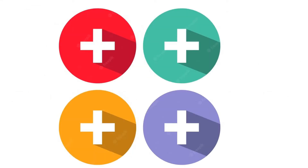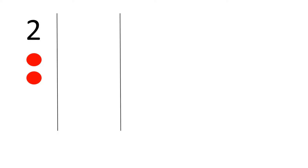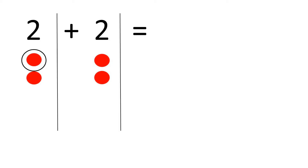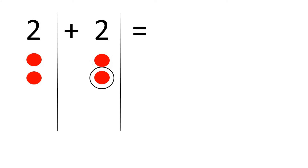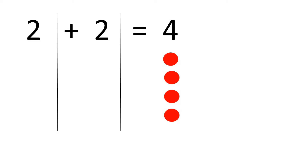Now let's add numbers from 1 until 10. 2, so I will draw 2 red dots. Plus 2, I will draw another 2 red dots. 2 plus 2 equals... Let's count them. 1, 2, 3, 4. So 2 plus 2 equals 4, and I draw 4 red dots below.